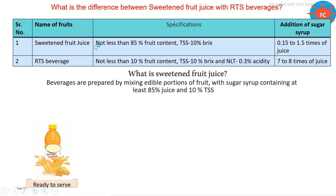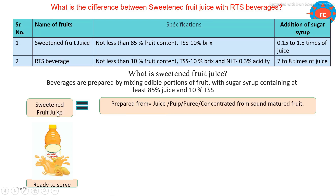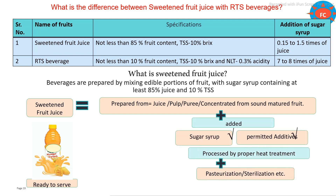Both sweetened fruit juice and RTS beverages have the same production processing line, but only the standardization varies. You can see that the addition of sugar syrup for both is different. Sweetened fruit juice can be produced directly from fruit pulp, juice, or puree concentrate by the dilution method, with addition of sugar syrup and permitted additives. Finally, heat treatment and preservation are carried out and packaging is done.